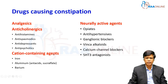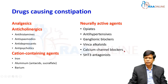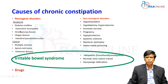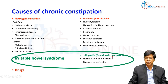Drug lists are many - including anticholinergics, cation-containing agents like iron, and neurally active agents. Opioids and calcium channel blockers like verapamil are quite notorious for causing significant constipation, especially in the elderly. Once you look into the minority of secondary causes and the more common drug-induced constipation, we are left with a large group of irritable bowel syndrome constipation type and idiopathic or functional constipation.